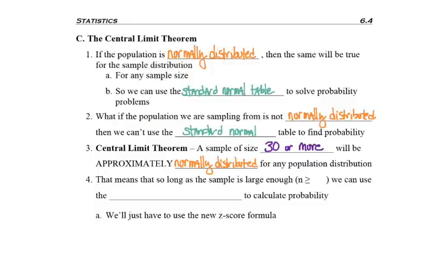So what this means is so long as your sample is large enough, so n is greater than or equal to 30, we can use the standard normal table to calculate probability.